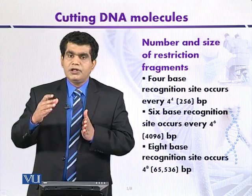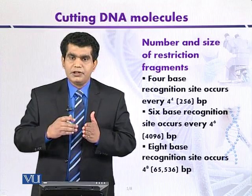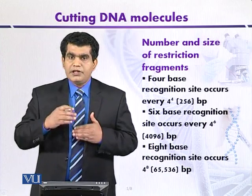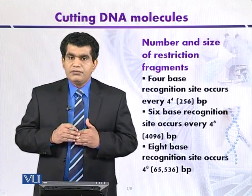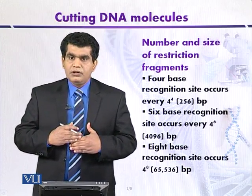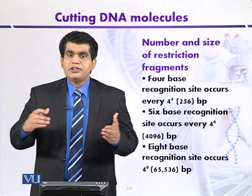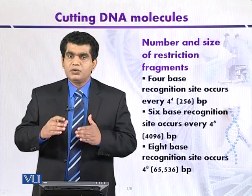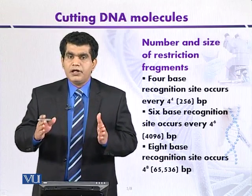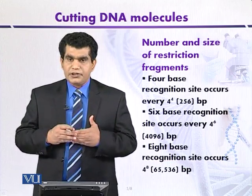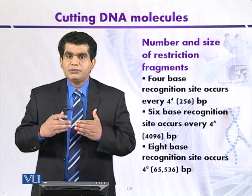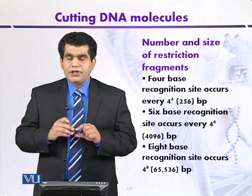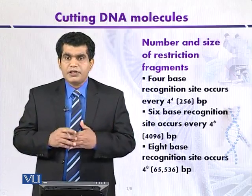Suppose we have incubated the target DNA with a particular restriction enzyme for a longer period of time. It means we give more time for digestion, and it will generate smaller DNA fragments. If we reduce the incubation period — that is, we allow only partial digestion — the restriction enzyme will not get enough time. So the length of fragments generated by partial digestion may be longer with the same restriction enzyme. In summary, the same restriction enzyme produces shorter DNA fragments when the digestion time is high, and larger DNA fragments when the incubation time is low or in case of partial digestion.